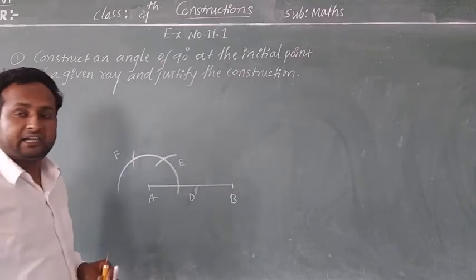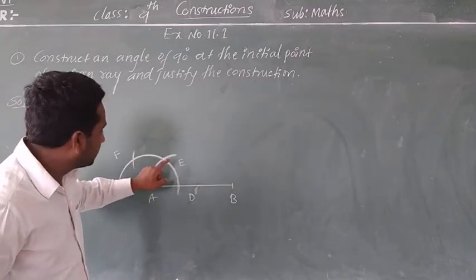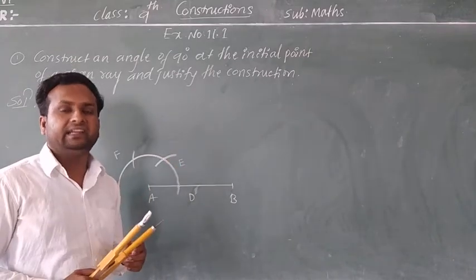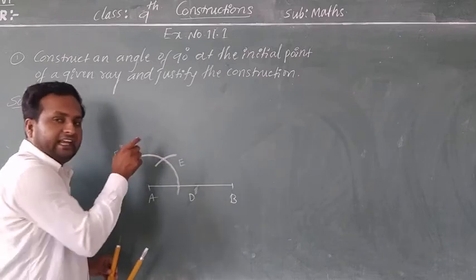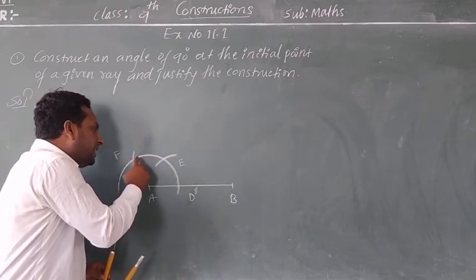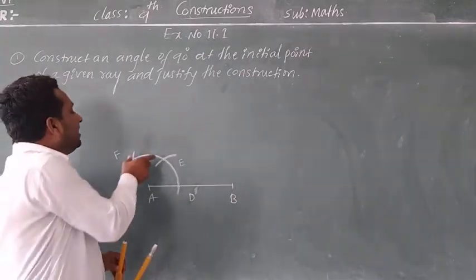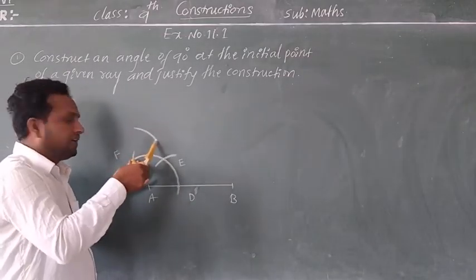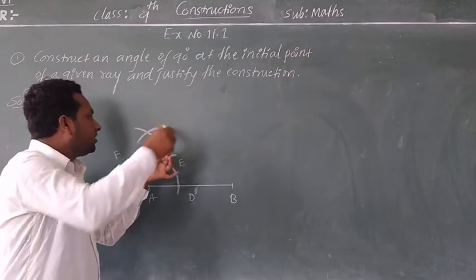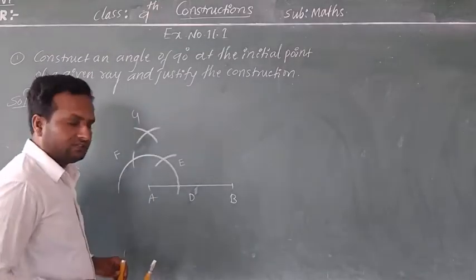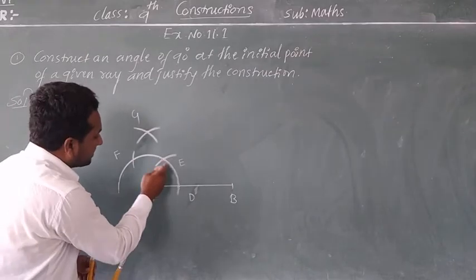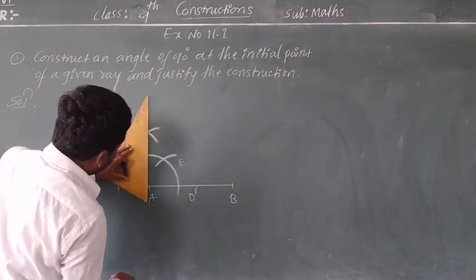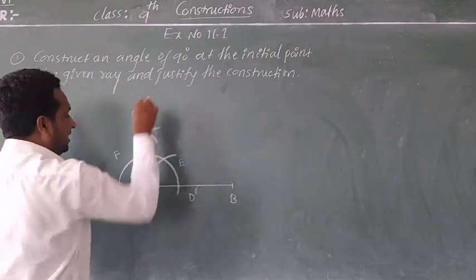We get 60 plus 60 equals 120 degree. But we need 90 degree, so we bisect the 60 degree arc. Out of 60 degree, we need 30 degree more from the base. To bisect: with E as center, take one arc, and similarly with F as center, take one more arc to cut the previous arc — call that point Z. So 60 plus 30 degree gives us 90 degree. Then join A and Z. You will get the angle of 90 degree.